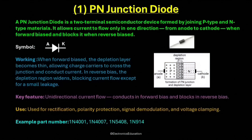The symbol of a diode has a triangle pointing towards a vertical line. The triangle represents the anode and the vertical line represents the cathode. Current can flow only from the anode to the cathode, not the other way around.